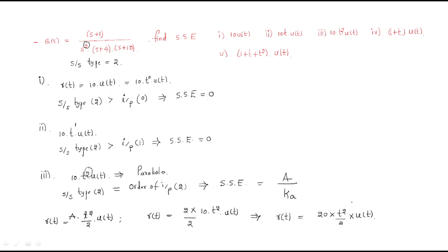Now find Ka: Ka = limit s→0 of s²·G(s). Substituting G(s) = 10(s+1) / [s²(s+4)(s+10)], the s² terms cancel.